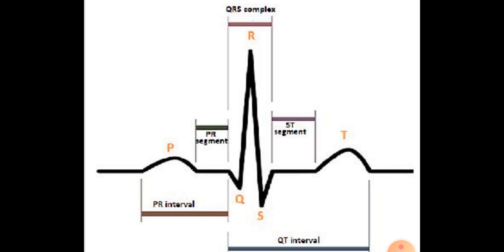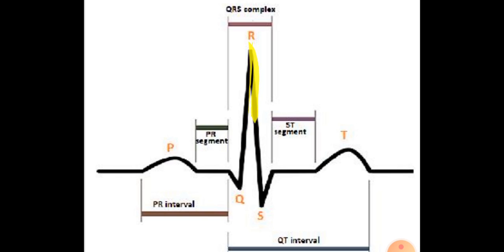After P, you can see the QRS complex. P shows atrial contraction, which we call depolarization. The QRS complex represents depolarization of the ventricles, which initiates ventricular contraction. When the ventricles contract, the semi-lunar valves open. This contraction starts after Q, and it marks the beginning of the ventricular systole.